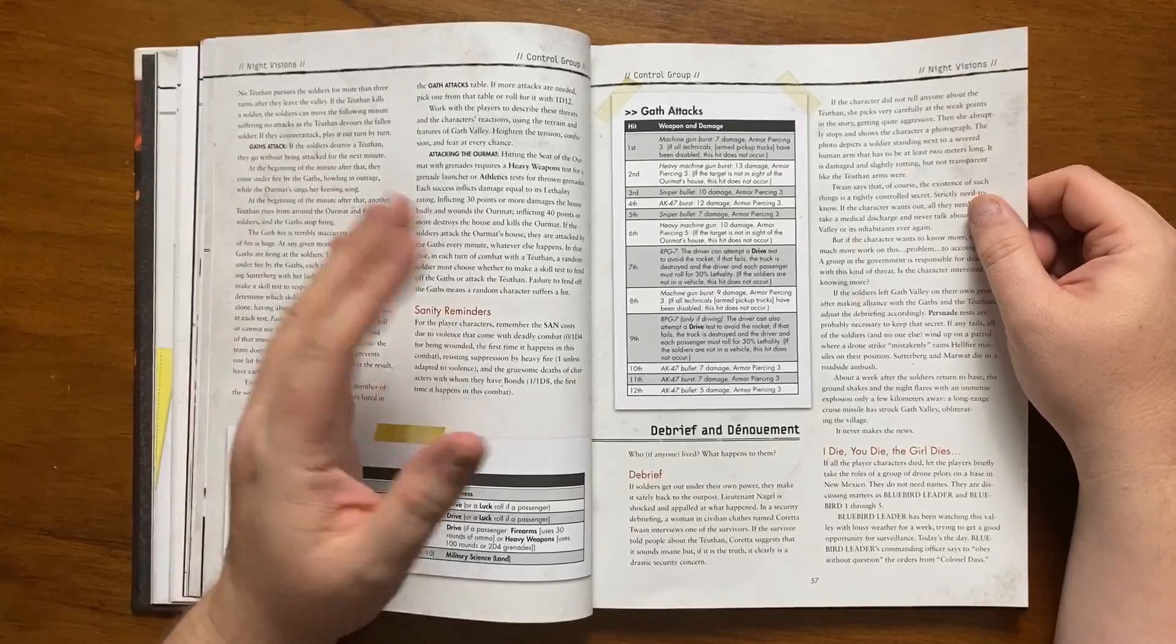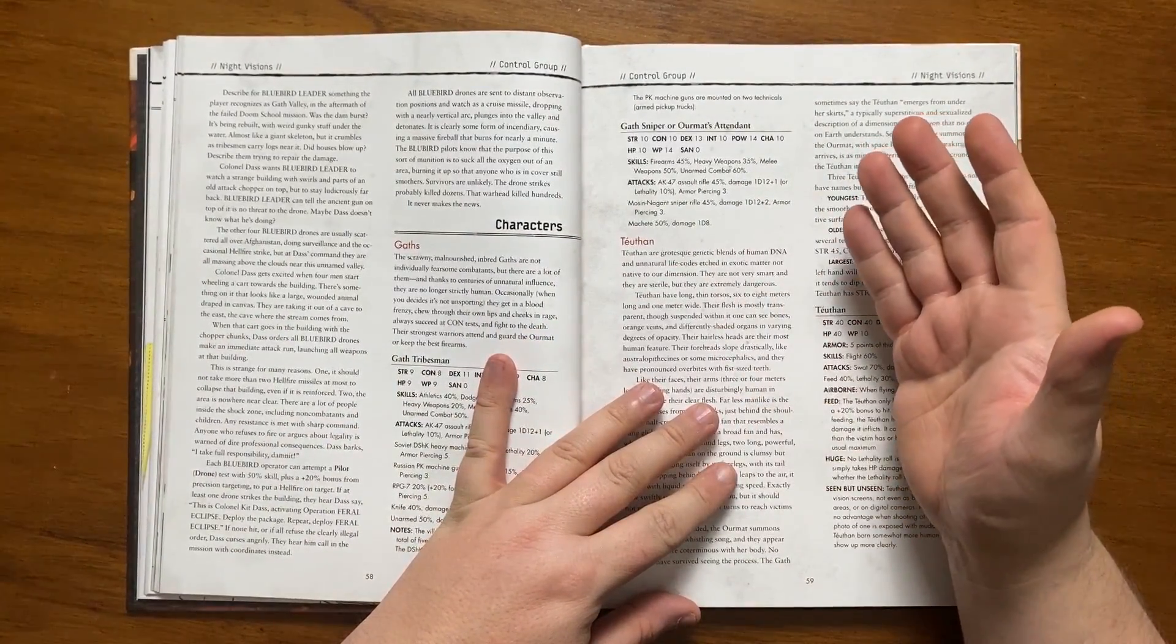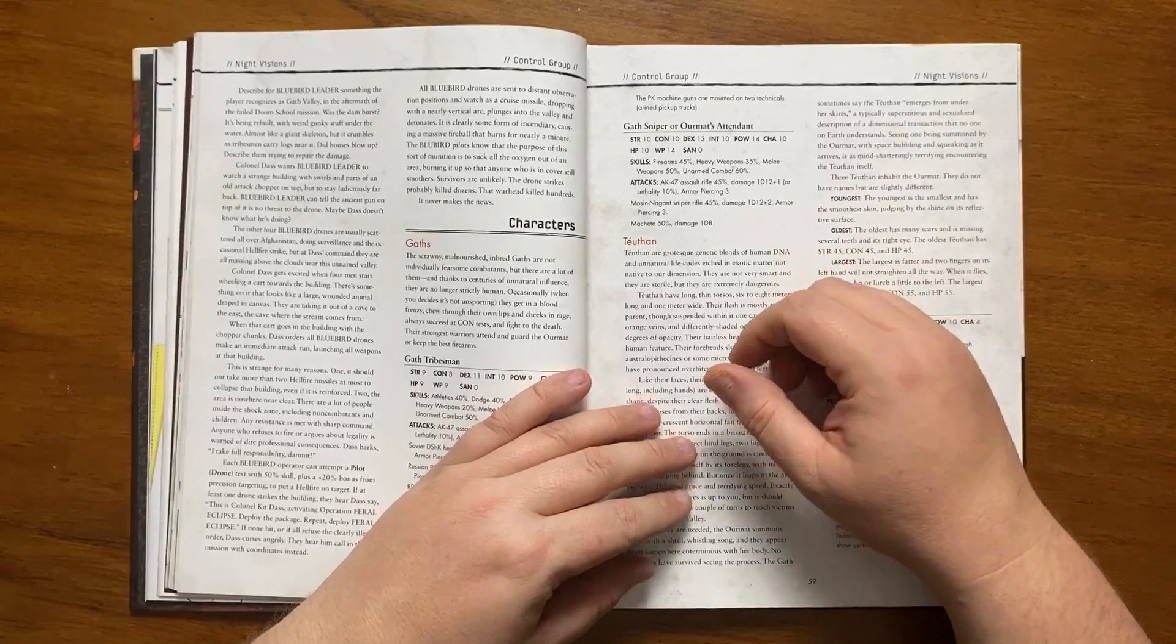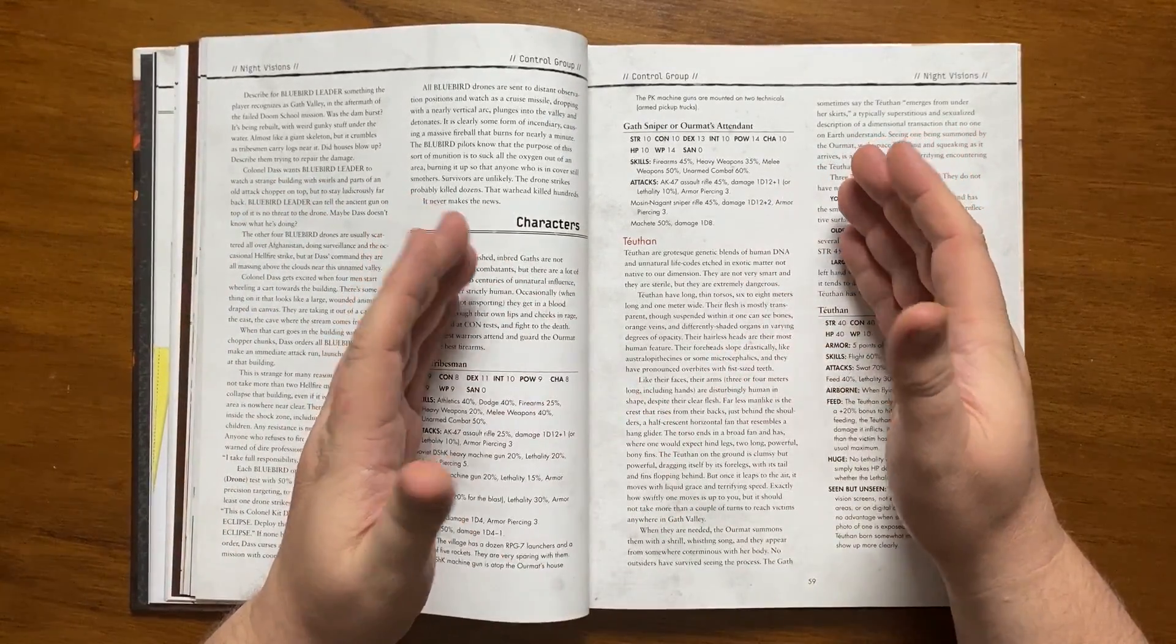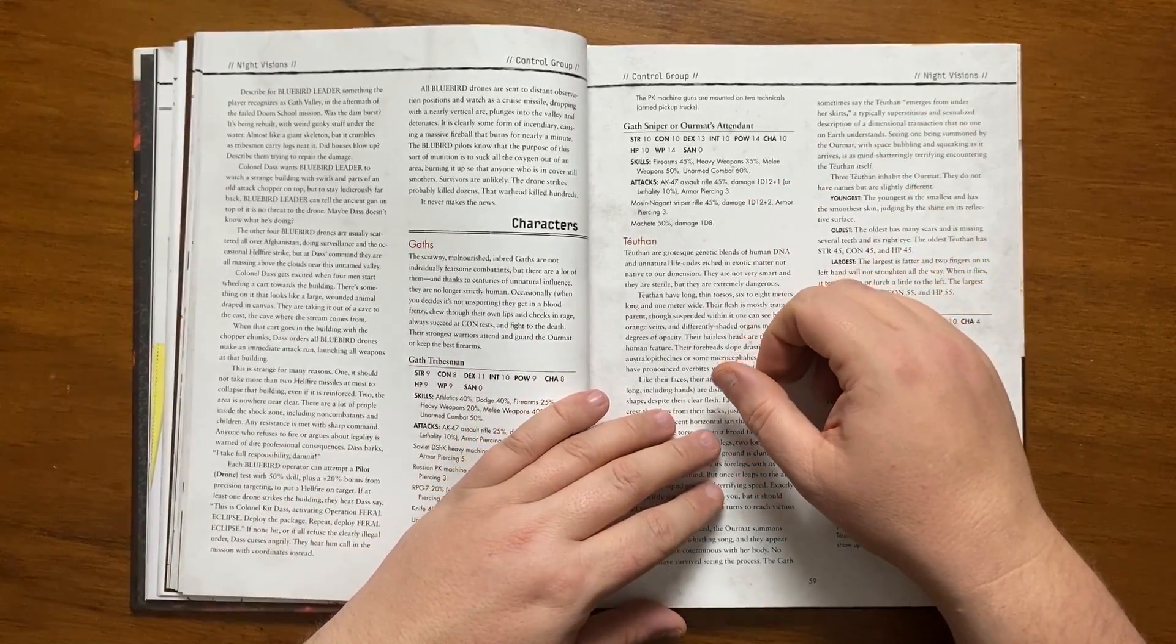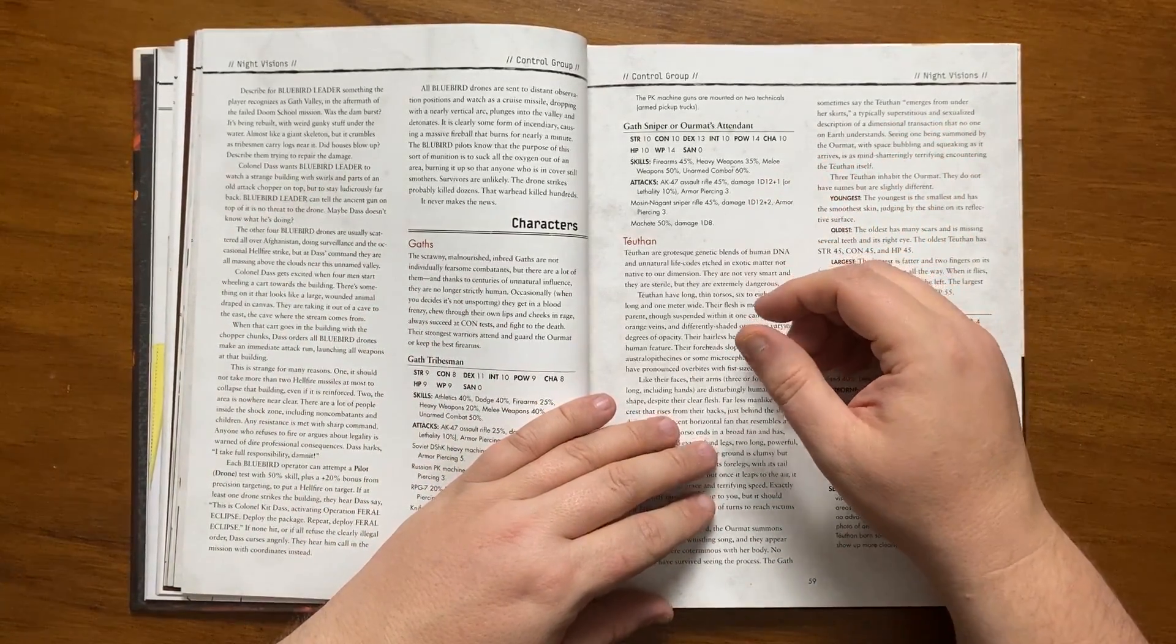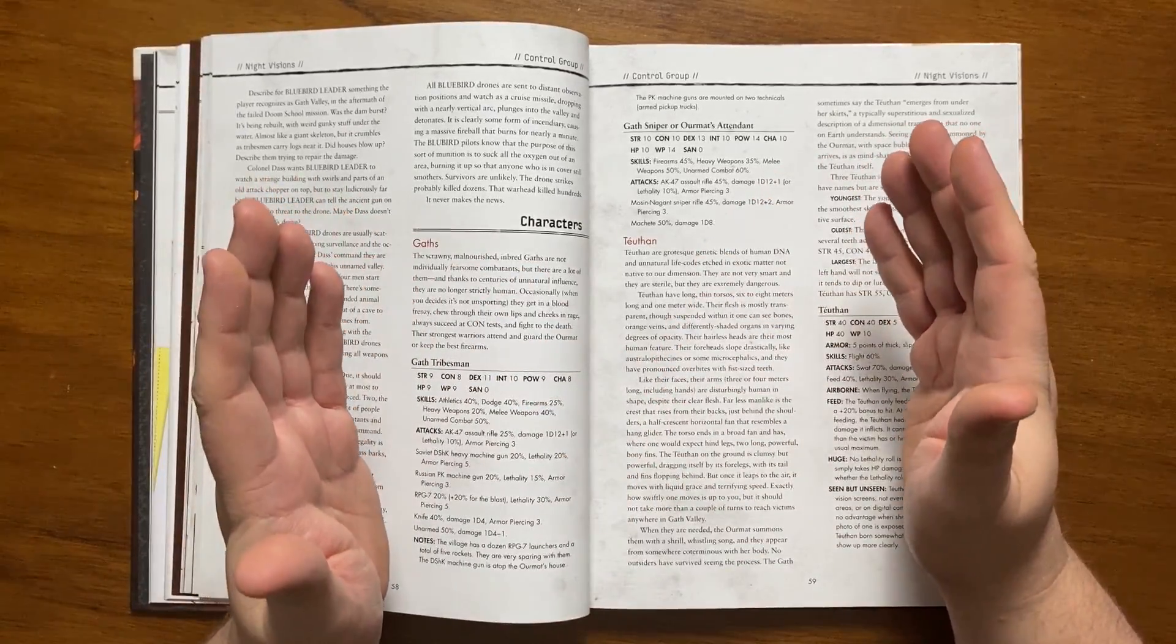If the soldiers all die then the players take on the role of a group of drone pilots on a base in New Mexico. They've been watching a specific valley for a week when orders come through from Colonel Das that are to be obeyed without question. Other drones are massing over the valley which may be recognised as the one related to the failed mission. A hellfire strike is ordered on a large building at the end after something large covered in a tarpaulin is wheeled in. The orders are given to launch all weapons at the building which could annihilate all nearby. The drones after doing this are sent to distantly observe as a cruise missile hits the valley. Survivors are unlikely and it of course never makes the news.